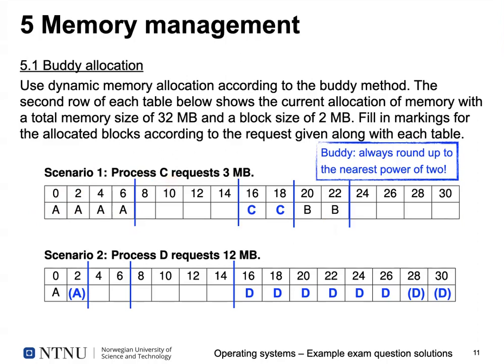Scenario one: process C requests 3 megabytes. We round up to 4 megabytes and there's a convenient free 4-megabyte block available, so we place C there without splitting another block — because you want free blocks to be as large as possible.